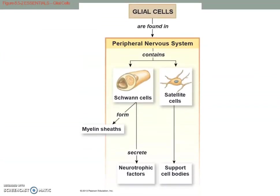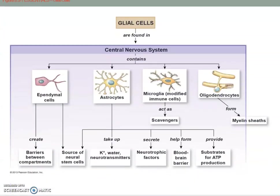Glial cells are the support staff of the nervous system. Typically a neuron has a support staff of about ten glial cells, and there are different types. Glial comes from the term for glue — they are like nerve glue. Schwann cells are an example; they form the myelin insulation, which is important for fast action potential transmission. Satellite cells support the cell bodies. Other glial cells include astrocytes, oligodendrocytes, microglia, and ependymal cells.